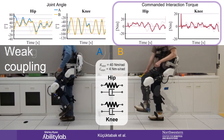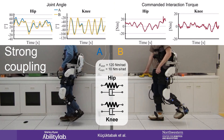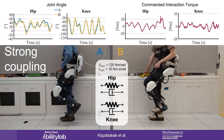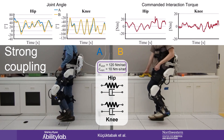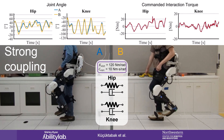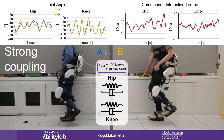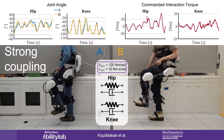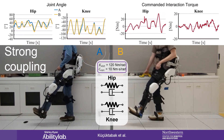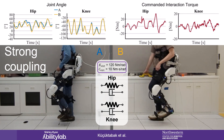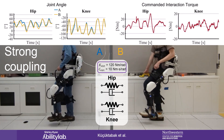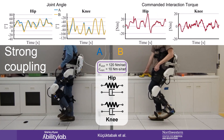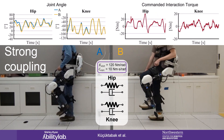Our framework also allows us to modify properties of the virtual coupling, like the spring and damping constants. With higher stiffness and damping, the strong coupling results in synchronized motion between the users, as any deviation results in larger interaction torques.